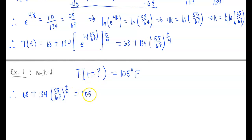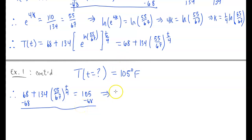Plugging this into a calculator gives t ≈ 26.08280456 minutes. Depending on how accurate you need to be, roughly 26 minutes — or 26.082 minutes. Doing the problem this way allows you to be as accurate as possible without rounding error. We had to first solve for K and then use that to find the time.